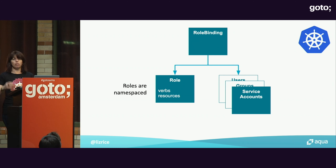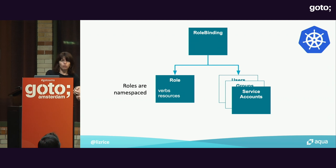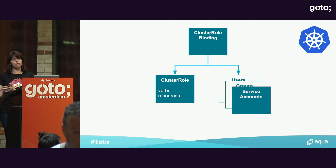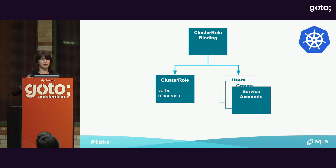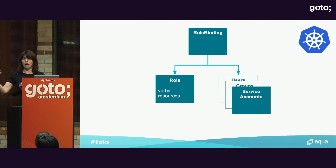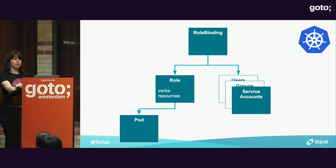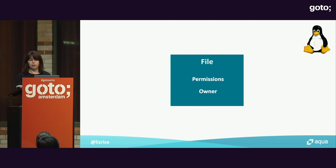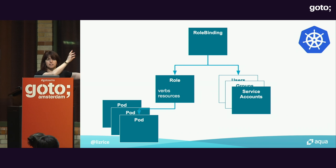Roles are namespaced, so you can define a role that only applies in a particular namespace. But if you want roles and role bindings that apply across the whole cluster, there are cluster roles and cluster role bindings. So we've got our role binding associating a role and some subjects, and that role refers to a resource or group of resources — and that's how permissions are defined in Kubernetes. Compared to Linux, where everything was in one object, Kubernetes has all these different abstractions.